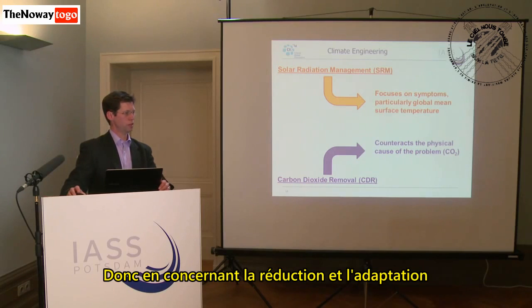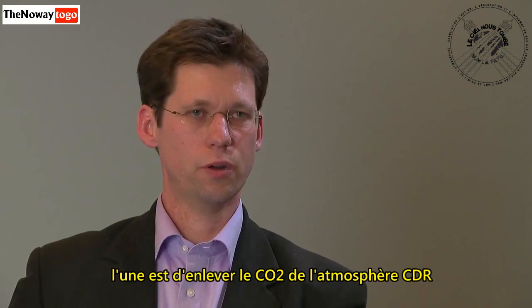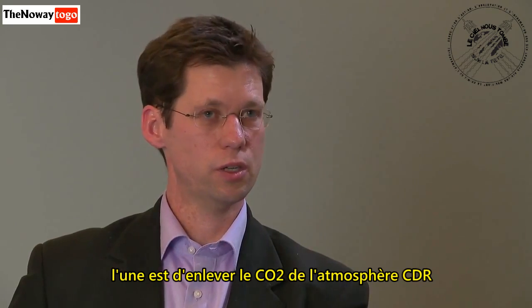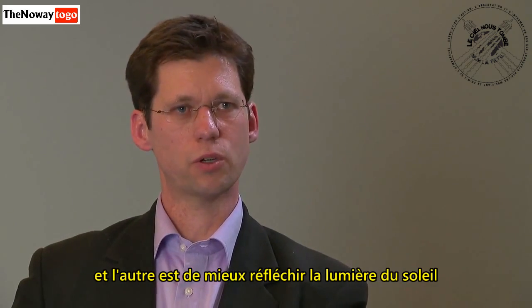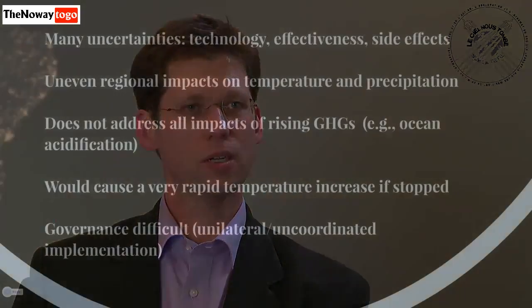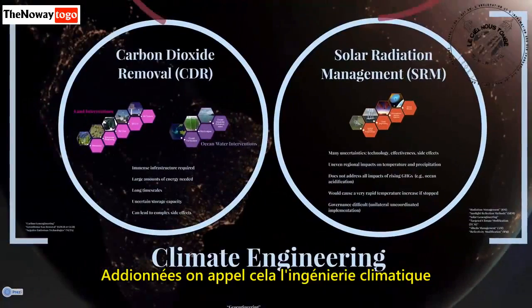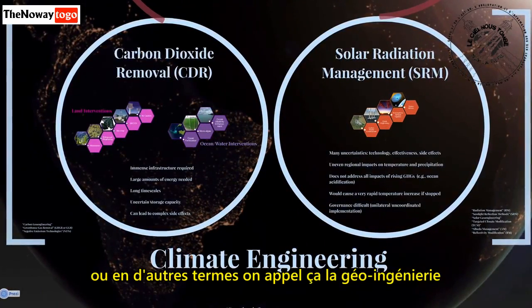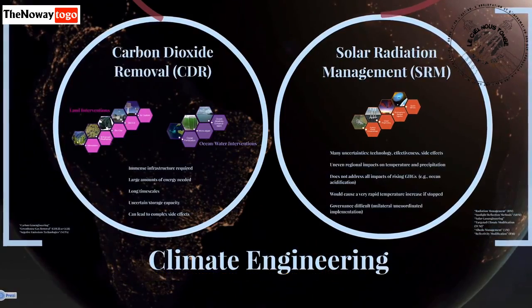So, in addition to mitigation and adaptation, there are two basic streams of thought: one is removing carbon dioxide from the atmosphere — CDR — and the other is reflecting back more sunlight — solar radiation management. Together, these are called climate engineering, or geoengineering.